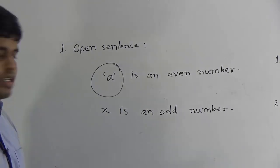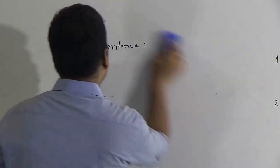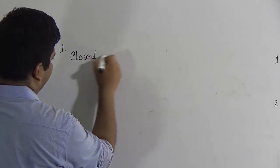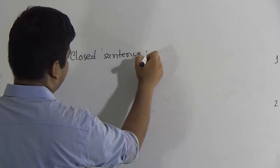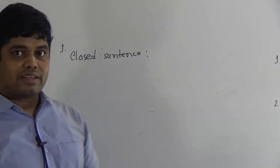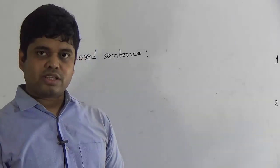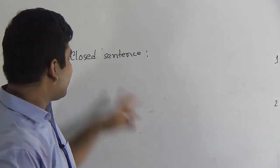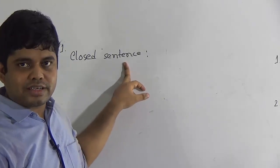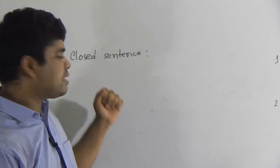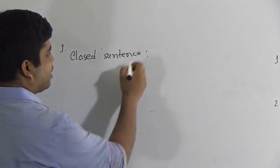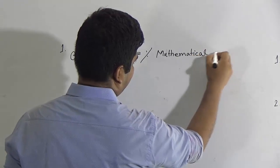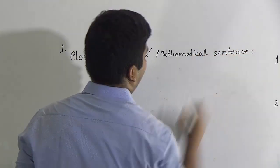Now we shall learn closed sentence, or mathematical sentence. How can we define closed sentence? When we can determine — just the opposite of open sentence — when we can determine a sentence is true or false, then that type of sentence is called a closed sentence. The other name of a closed sentence is mathematical sentence.